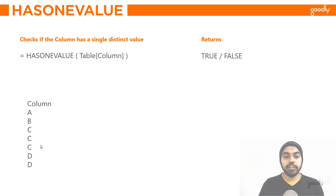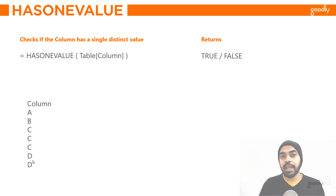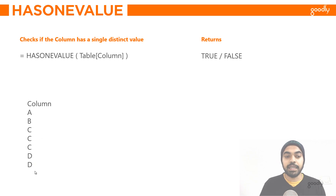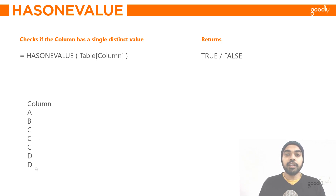The HASONEVALUE function is going to check if the column you mentioned has got one distinct value or not. If it has just one distinct value, it's going to give you TRUE; otherwise it's going to give you FALSE. In this particular case, the column doesn't have one distinct value — it has more than one: A, B, C, and D — hence this formula is going to give you FALSE. Now let's jump over to Power BI and take a look at how this formula works.